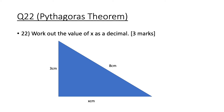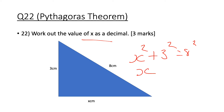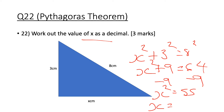Question 22: work out the value of x as a decimal using Pythagoras. x² + 3² = 8², so x² + 9 = 64. Subtract 9: x² = 55. Therefore x = √55 ≈ 7.42 centimetres to two decimal places.